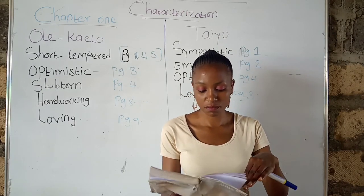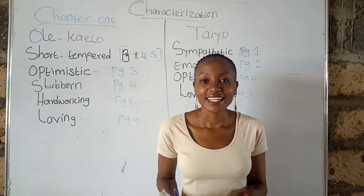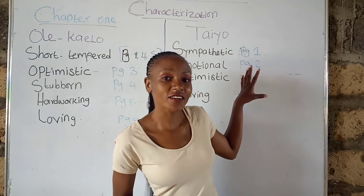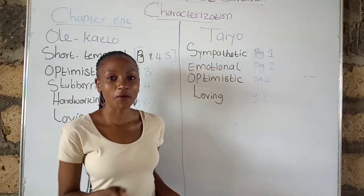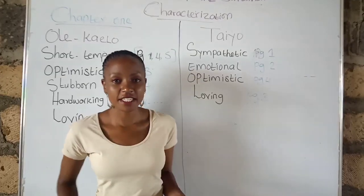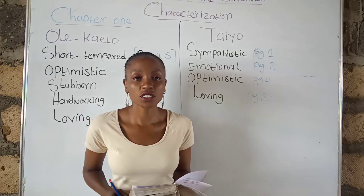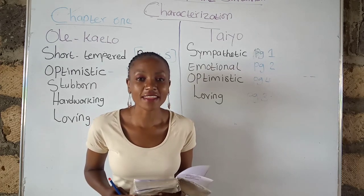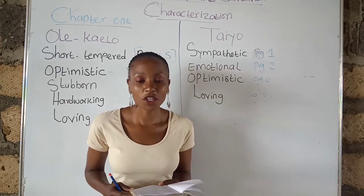We move to the second character: Tayo, the pride of Ole Kyalo. Number one, Tayo is sympathetic — she sympathizes with the offloaders because she knew the sting of her father's tongue. That is on page one, the second-last paragraph.